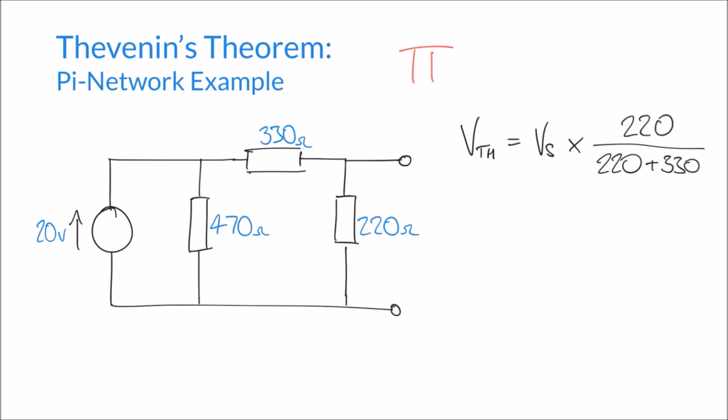And we can simplify that a little bit. Vs, first of all, we have a voltage of 20 volts there, multiplied by 220 over what will add up to 550. And if I calculate that, I come up with a value of 8 volts.